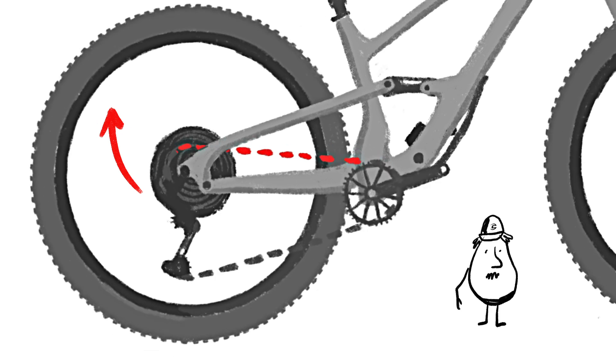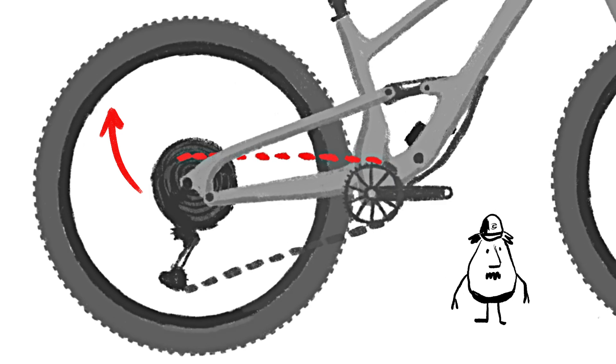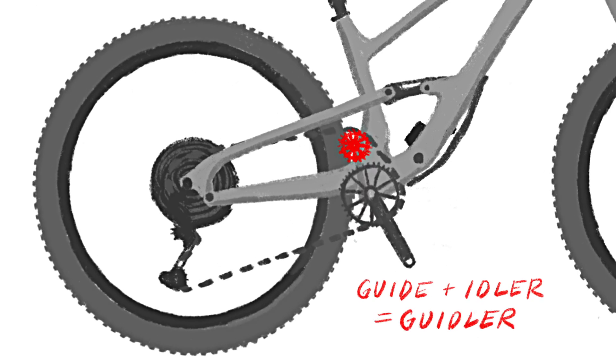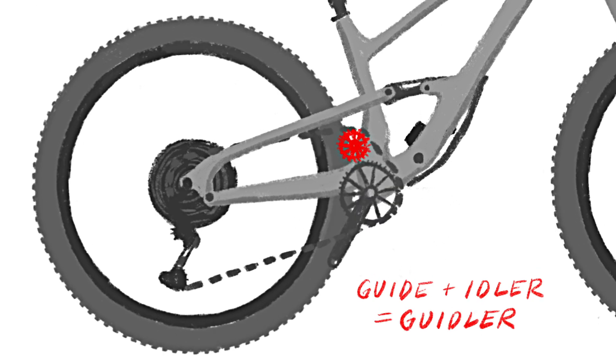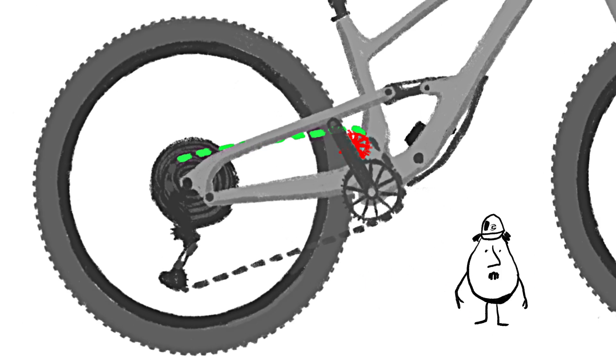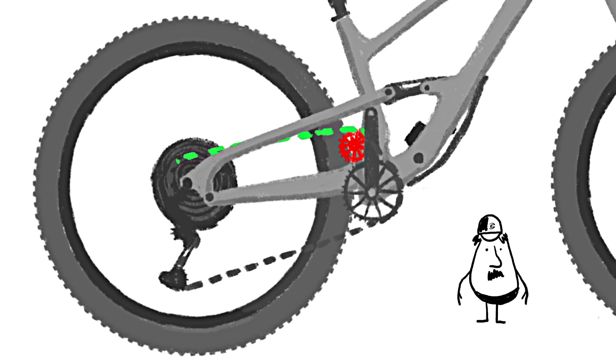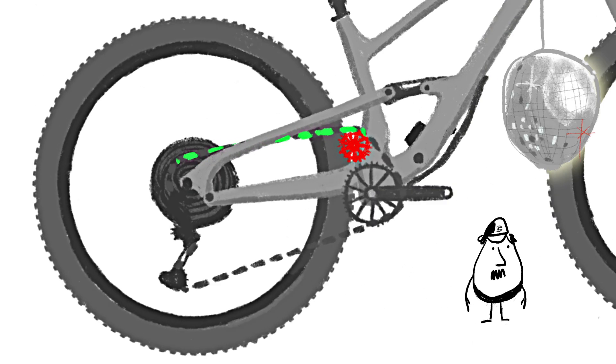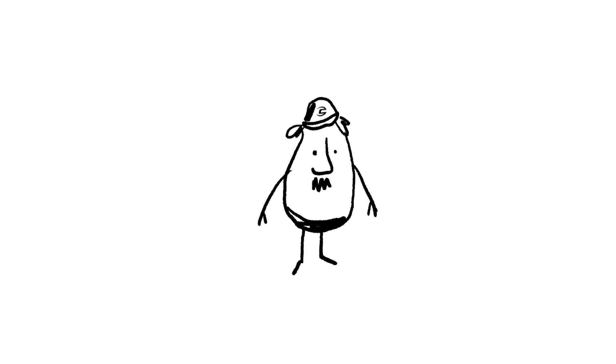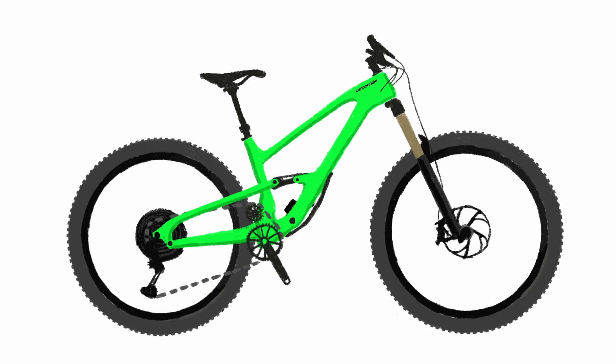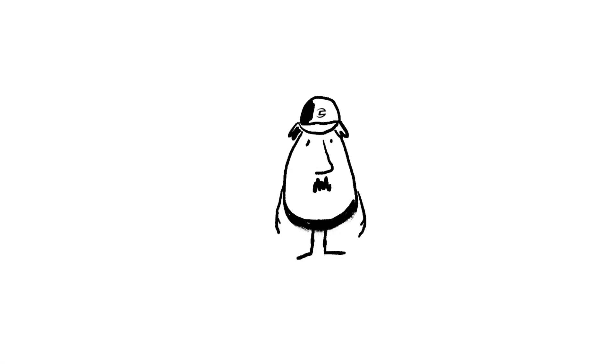Not fun and not fast. So we added the geidler. That's part chain guide, part idler pulley. And putting this little contraption right here eliminates chain growth. And that kills all that pesky pedal kickback and keeps the suspension movement and your pedal stroke as smooth as a 70s slow jam. So with this high pivot and geidler setup, we get a great rearward wheel path, amazing bump absorption, and unreal smoothness. But that is not nearly enough.